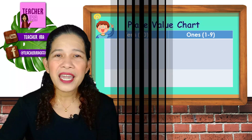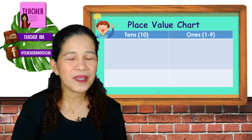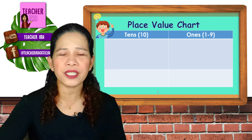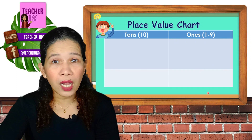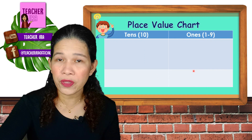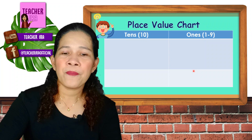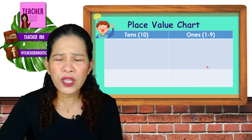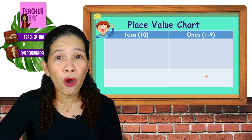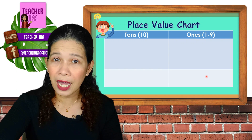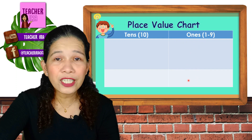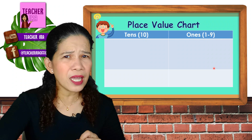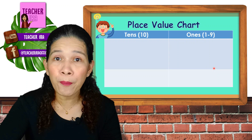Here is a place value chart. You would further understand how it is to have ones and tens if you understand the place value chart. As you can see here kids, we have two columns for now because you are still in preschool, but when you go into further studies there are more places. This place is called the ones place and this one is called the tens place. Remember that each column or each place here would just have one digit.